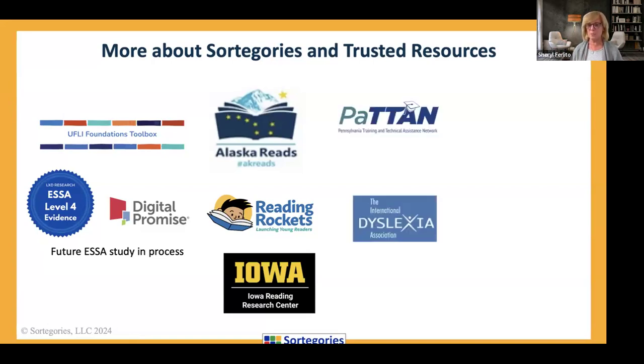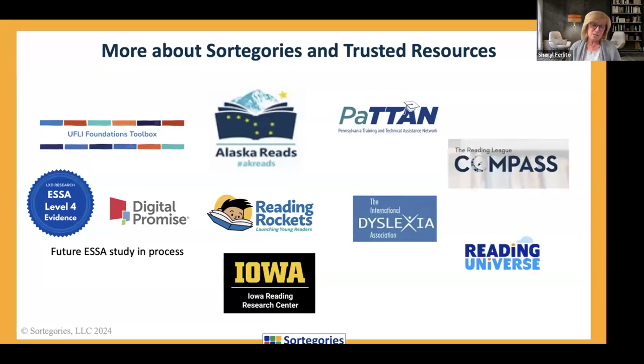We're going to be doing a presentation for PATTAN. They're excellent. Anytime you can find anything from IDA, if you have students with dyslexia, or really all kids, to be honest. And then the Reading League Compass will help school districts understand more about English learners or any category of information that you need to learn about. The Reading League Compass is something new. In addition to the Reading Universe, these are all really great trusted resources. The Reading League Compass and Reading Universe is really great for professional learning from your school district. So very good.